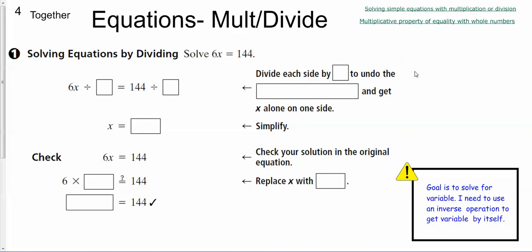We have lesson four, solving simple equations with multiplication or division and the multiplicative property of equality with whole numbers. Here, what we need to take a look at, here is the original equation, 6x equals 144.